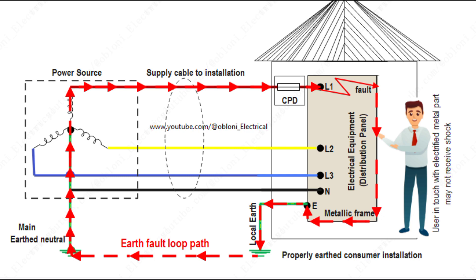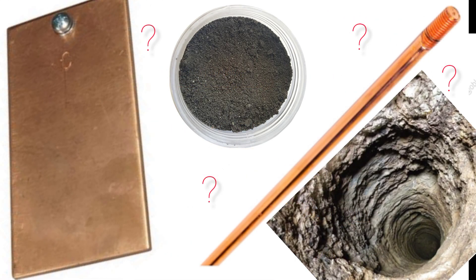So how can we achieve this low resistance path? Does it mean we have to use a very long rod? Using very long rods may mean we have to dig very deep — so how deep do we have to dig, and how long should the earth rod be? There are different types of earthing electrodes and different methods of earthing. The best type of earth electrode for a particular application will depend on factors such as the soil conditions, the size and type of electrical system, and the budget. It is always best to consult with a qualified electrician to determine the best type of electrode for your specific needs.